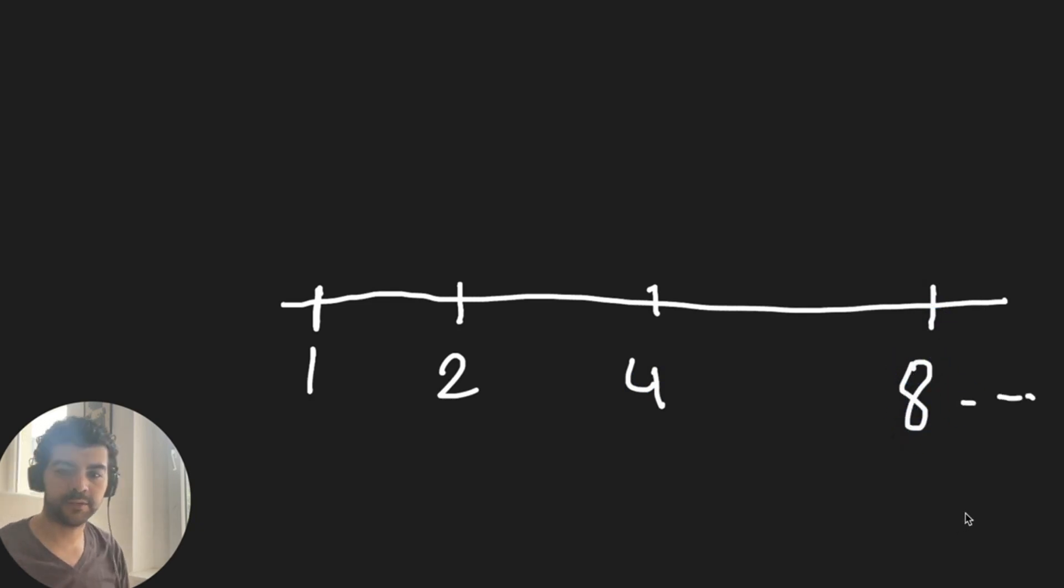Jitter is simply randomness incorporated into the delay between retries. Think of it this way: this is the timeline. With exponential backoff, we retry after one second, then after two seconds, then after four seconds, then after eight seconds, and so forth. But with jitter, instead of retrying after one, two, four, or eight seconds exactly, we add some randomness.